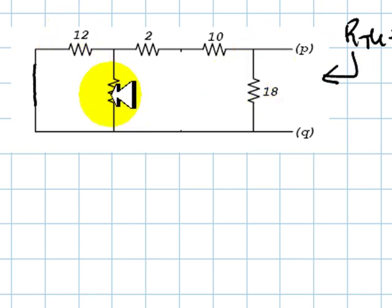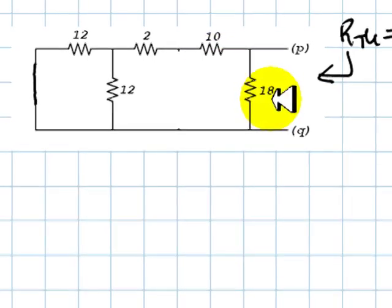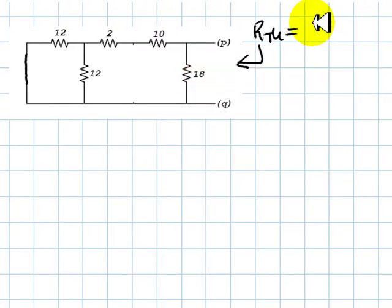The equivalent resistance that turns out to be RTH would be these two resistors in parallel, 12 and 12 in parallel, that is 6 in series with 2, that would be 8, series with 10, that would be 18, 18 in parallel with 18, and that is 9 ohms, and that is RTH.